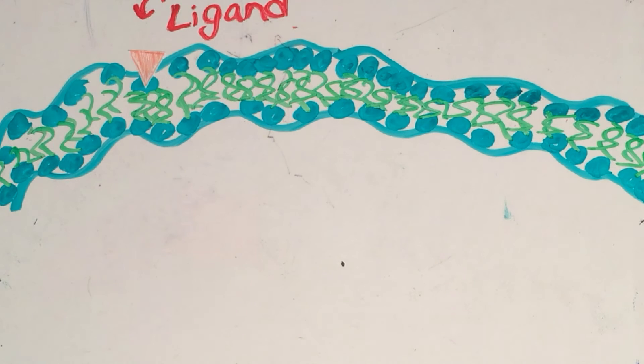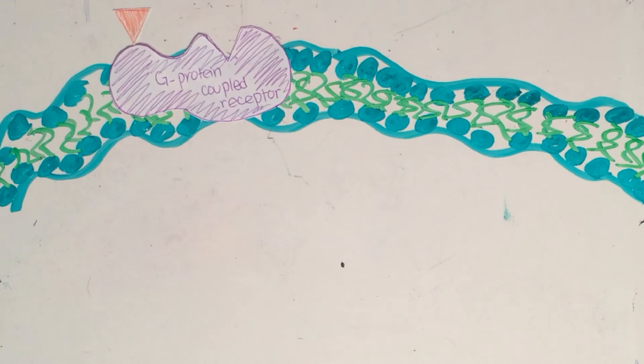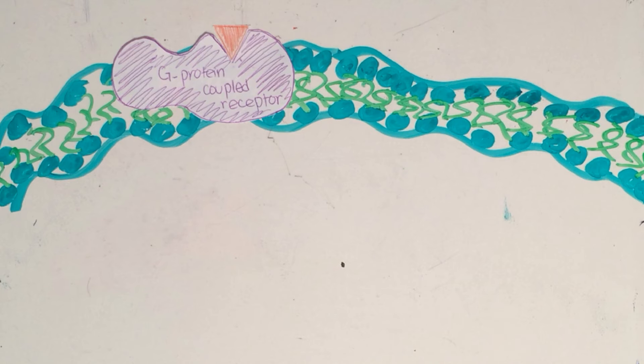Because epinephrine is a ligand, it can't go through the phospholipid bilayer membrane, so the epinephrine binds to the G-protein coupled receptor, which marks the first phase of cell signaling, reception.